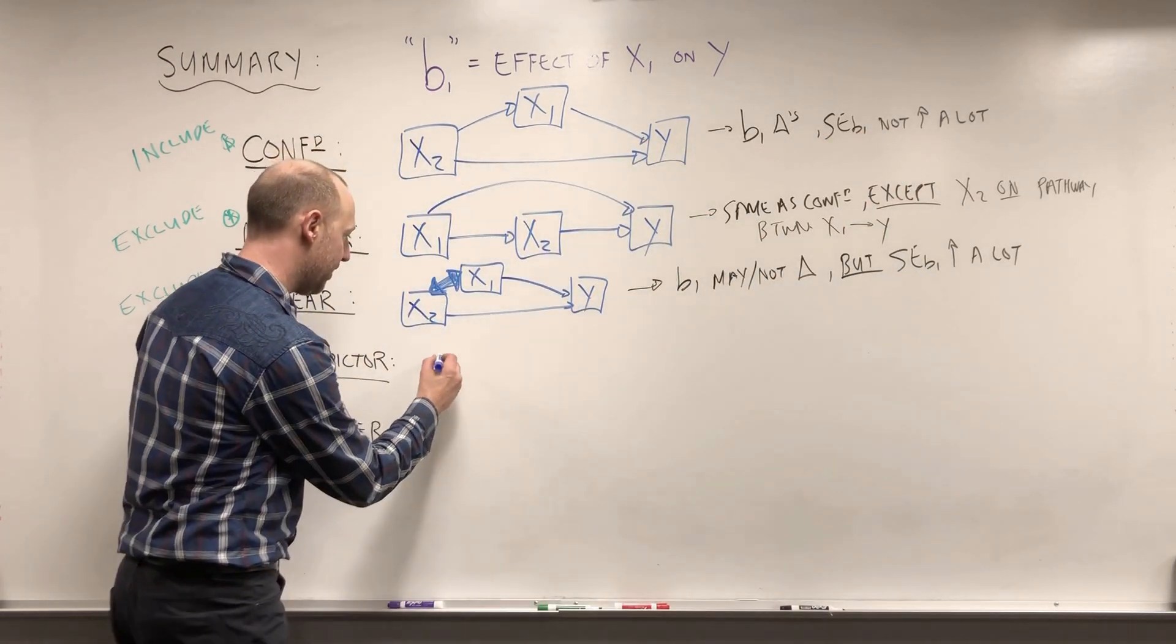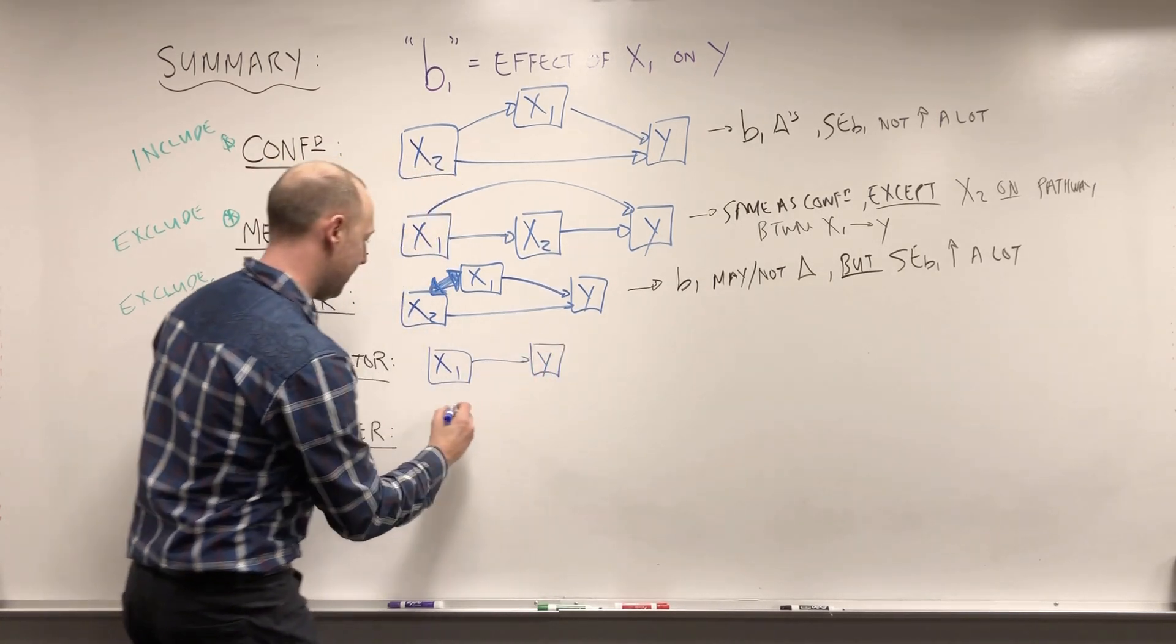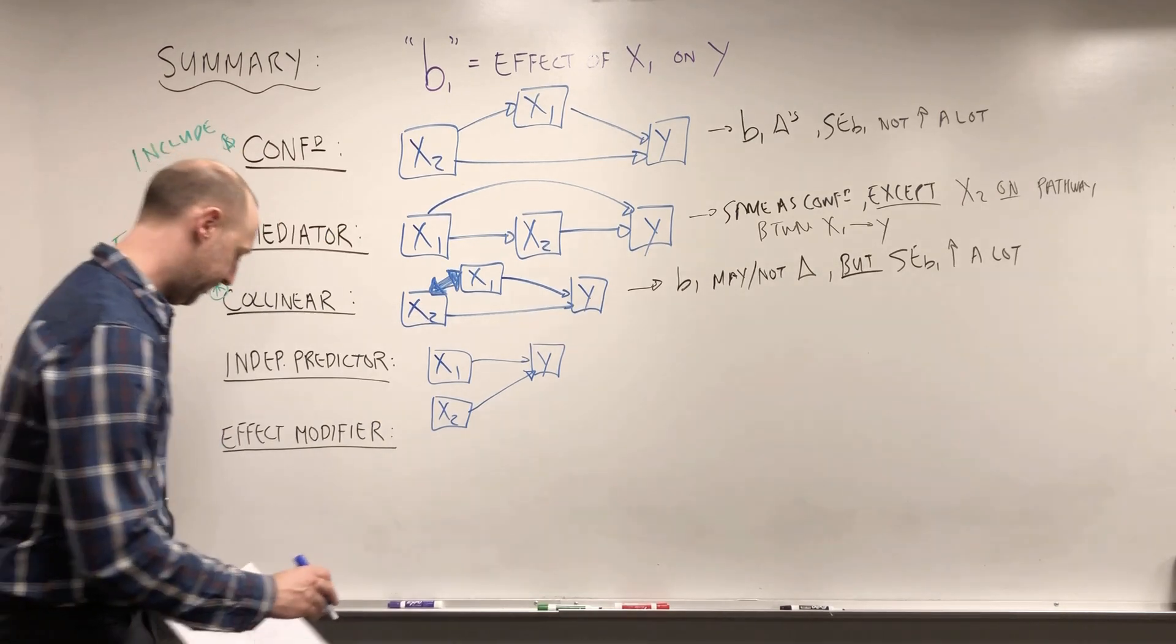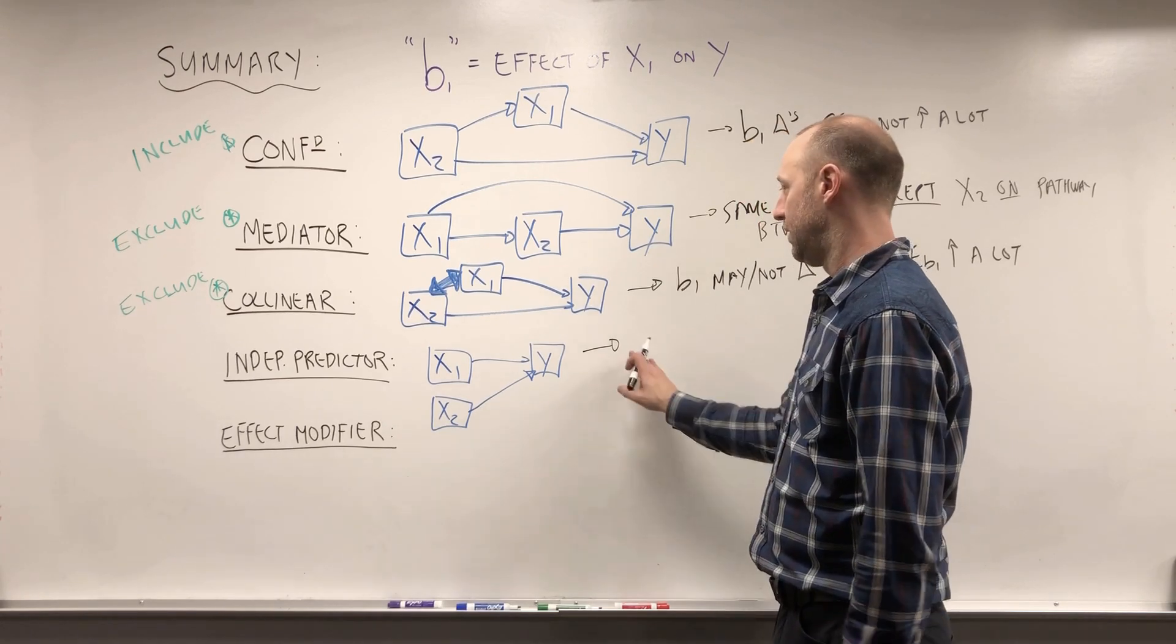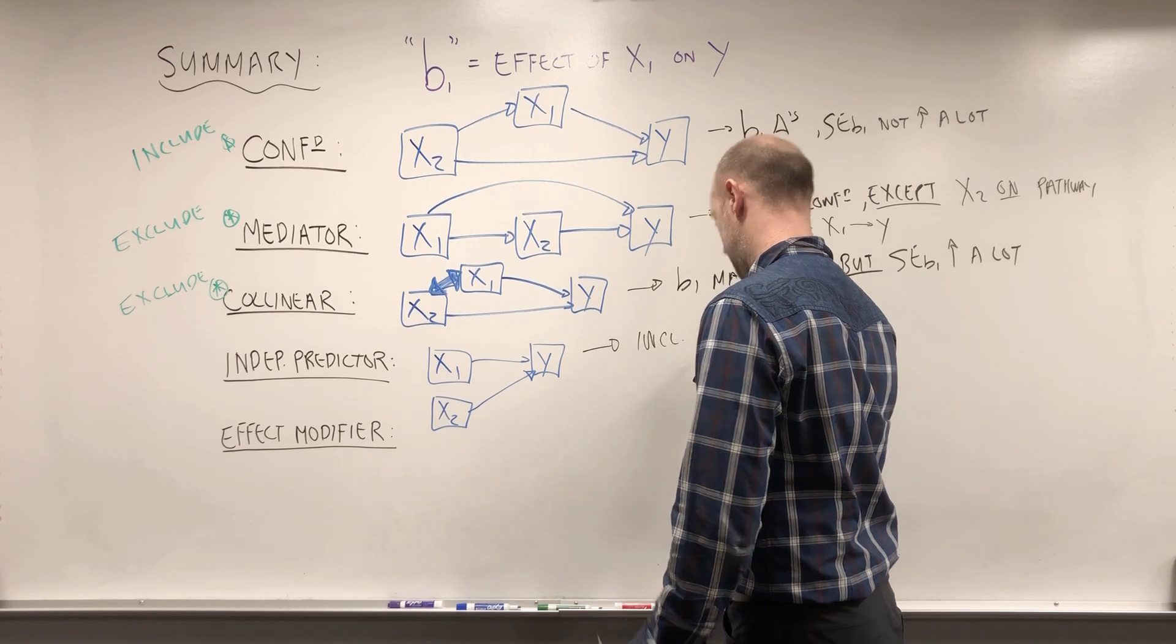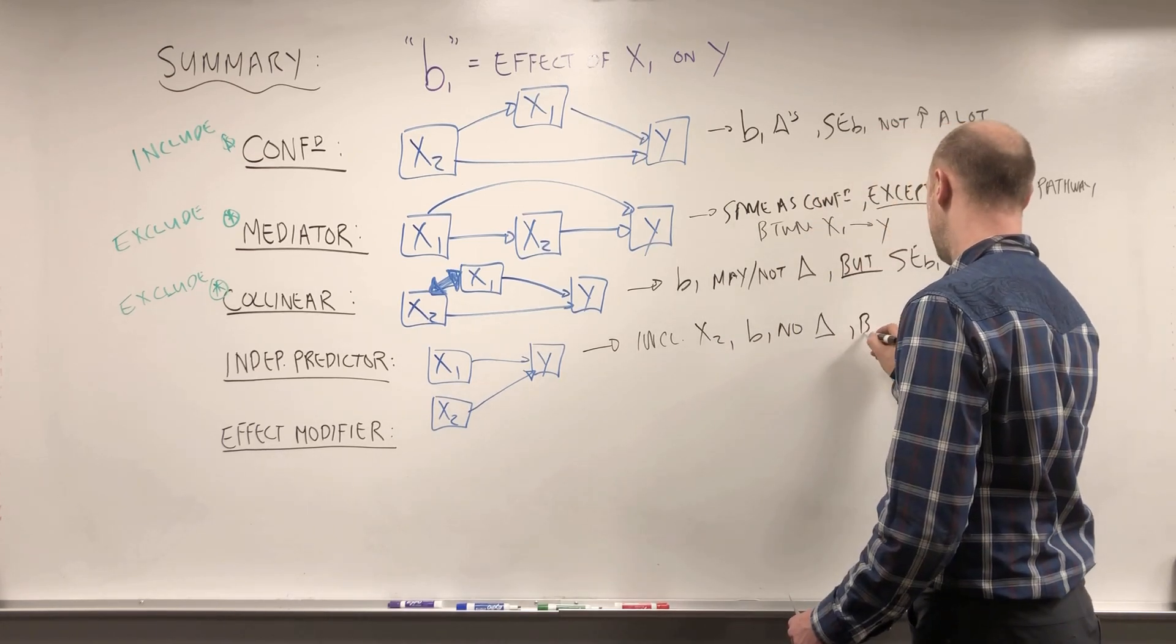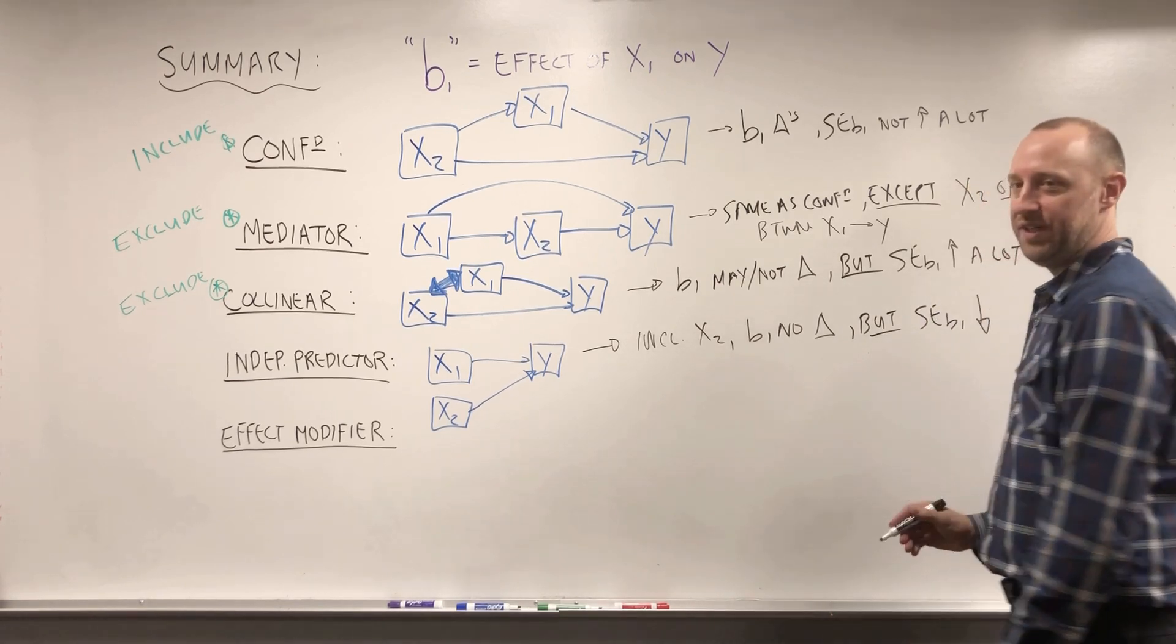Independent predictors, we talked about. This is where we want to estimate the effect of X1 on Y. There's some other variable, X2. It is not associated with X1, but it is another predictor of the outcome. The way we can identify these numerically is when we include X2, B1 should have no real change, but the standard error of B1 will usually decrease.